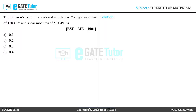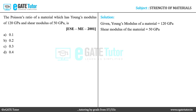The Poisson's ratio of a material which has Young's modulus of 120 gigapascal and shear modulus of 50 gigapascal is to be found. We are given the Young's modulus E = 120 gigapascal and the shear modulus G = 50 gigapascal.